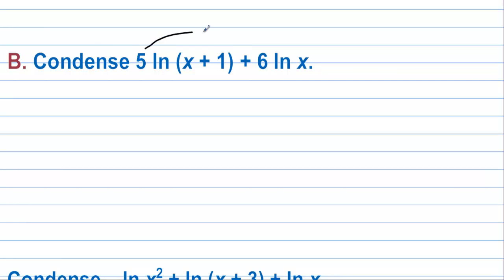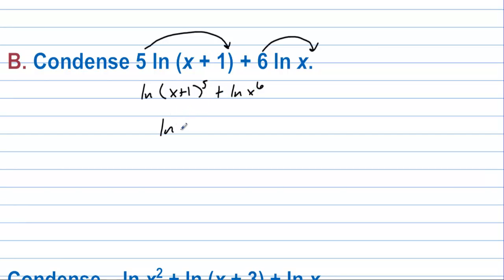Condense the next expression. Bring the 5 and 6 back up as powers: natural log of (x + 1)⁵ plus natural log of x⁶. Since there's a plus between them, we combine using multiplication: natural log of (x⁶ times (x + 1)⁵).